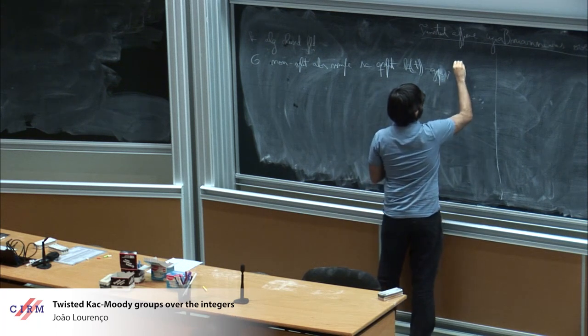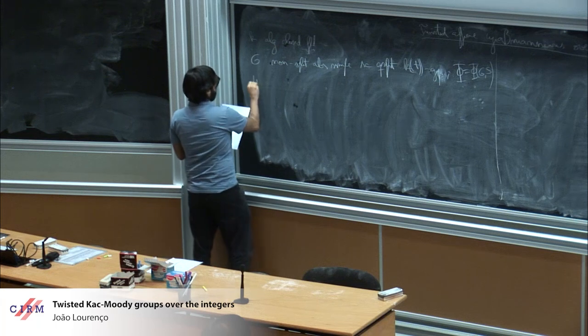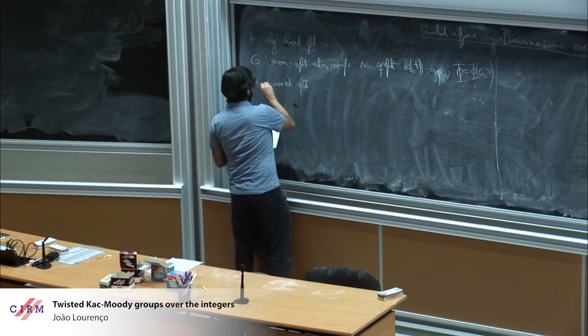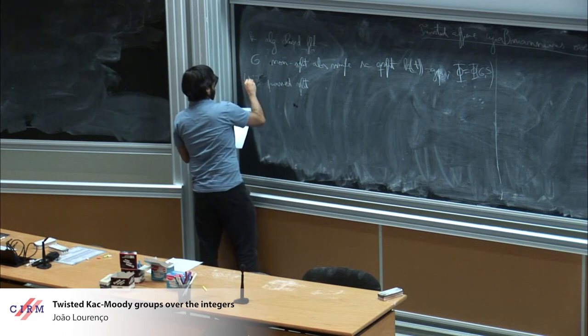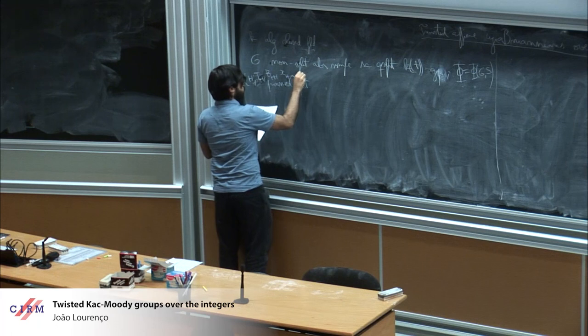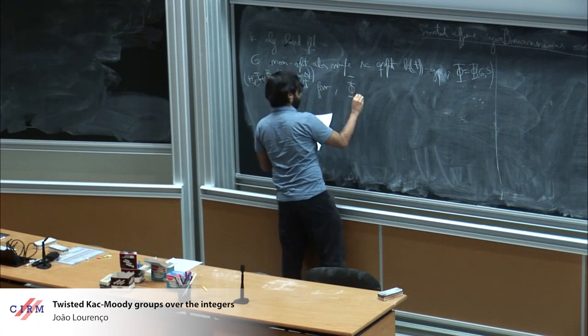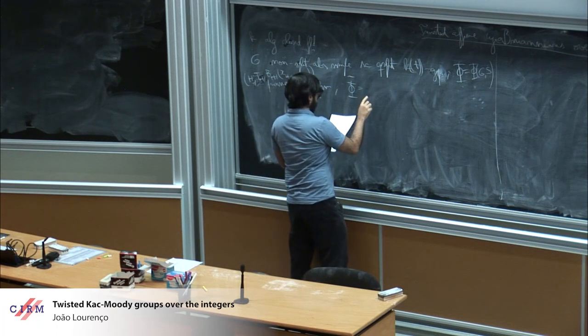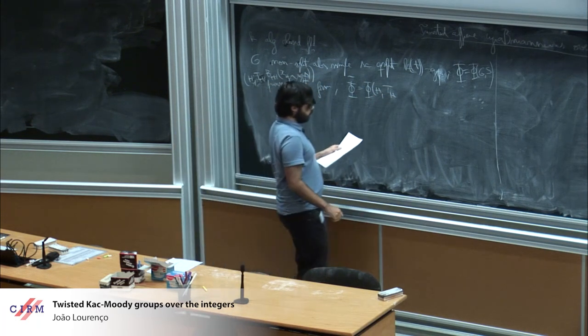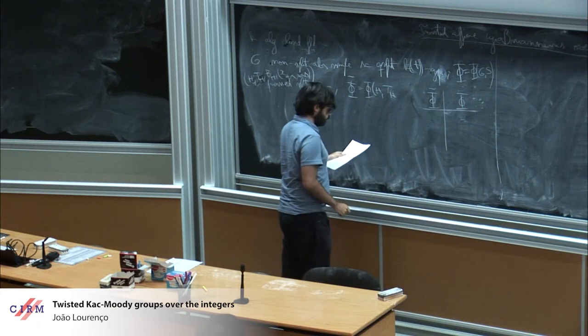I denote by Φ its root system. And I fix a pinning and its pin split form. Let me give the other data. And I denote by Φ tilde the corresponding root system. Let me just list what the possibilities are, it's not that complicated.